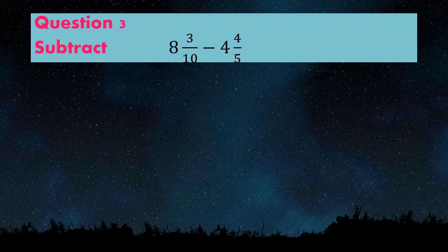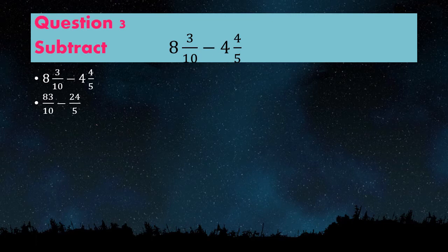Now question number 3: 8 and 3/10 minus 4 and 4/5. These fractions are given as mixed fractions, so we need to convert them into improper fractions before subtracting. Converting: 8 times 10 plus 3 gives 83/10, and 4 times 5 plus 4 gives 24/5.